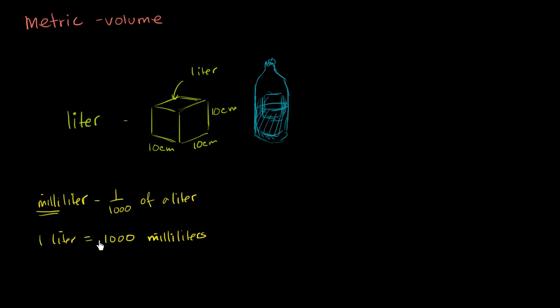And if you wanted to visualize what a milliliter looks like, imagine taking a cube—instead of making it 10 centimeters on each dimension, make it only 1 centimeter in each dimension. So 1 centimeter wide, 1 centimeter deep, and 1 centimeter high, and then you're looking at a milliliter.